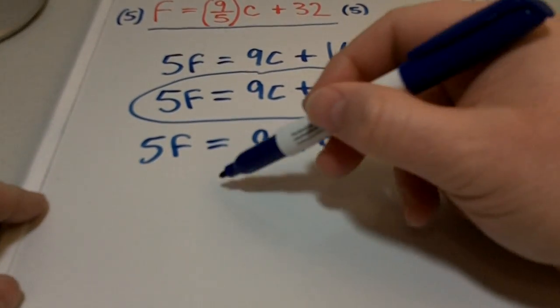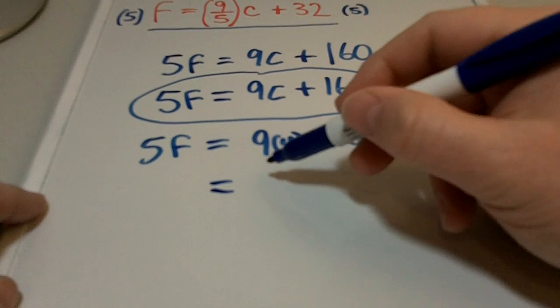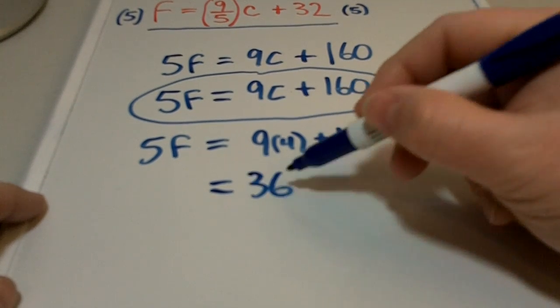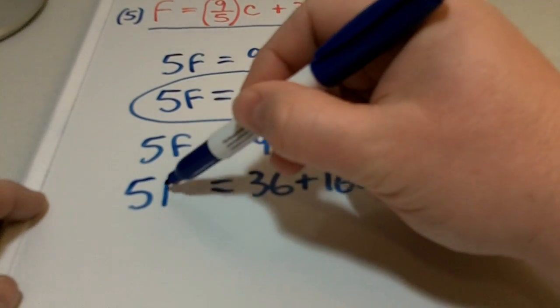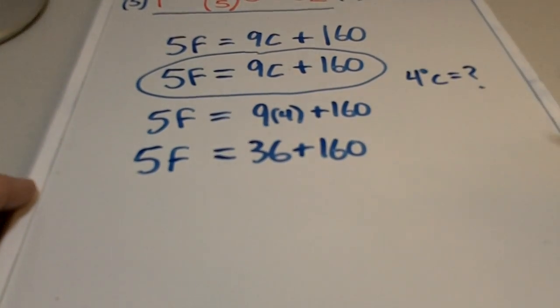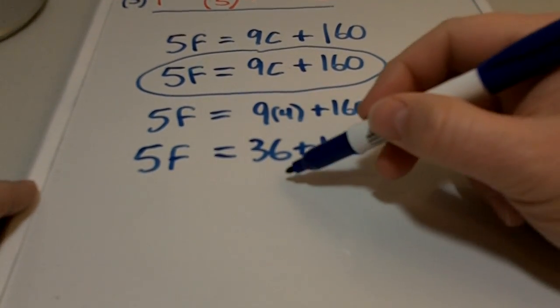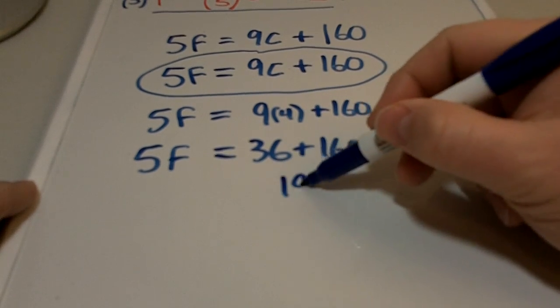So what we've got here is 9 times 4 is 36, plus 160 still equals 5F. 36 plus 160 is 196.